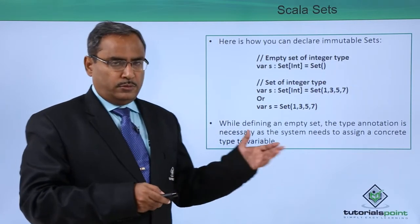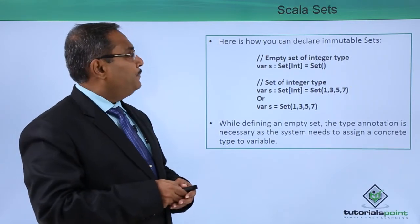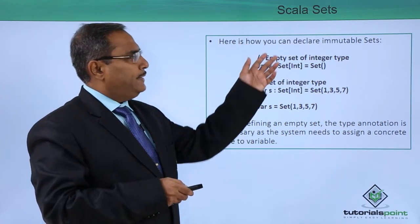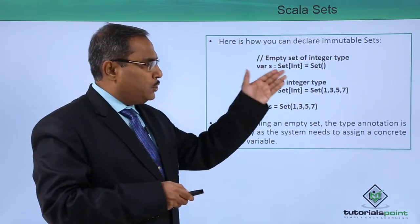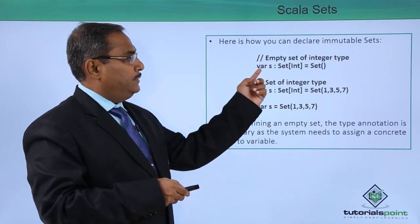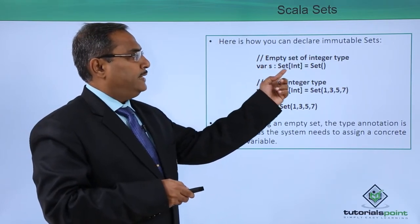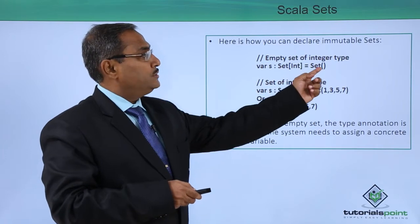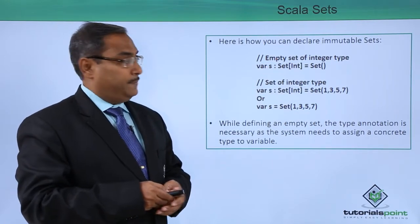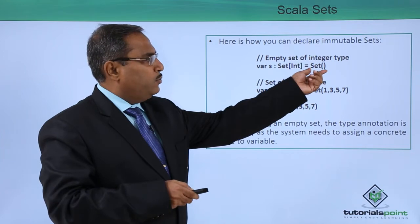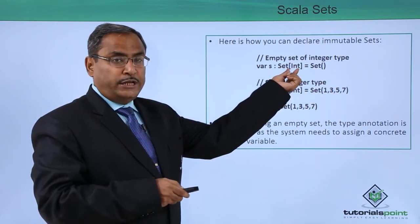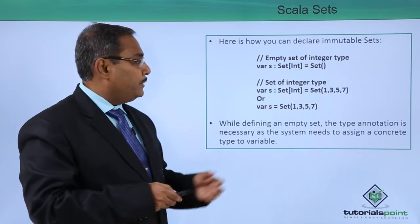Here is one sample code to get a better idea of how to declare immutable sets. So, var s colon Set[Int] is equal to Set — this declares an empty set of integer type. When you are defining an empty set, mentioning the data type is mandatory.